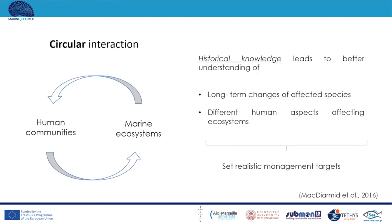The interaction between human communities and marine ecosystems is circular. This means that humans not only are affected by the marine environment but also affect marine ecosystems. An example of this could be fishing communities. Marine populations shape human communities that make a living from the services and goods provided by ecosystems. On the other side, human activities such as fishing have an effect on marine populations of targeted species, for example in the case of overfishing. Historical knowledge leads to a better understanding of both the long-term changes of affected species and the human aspects that affect the ecosystem, which can support us to set realistic management targets concerning marine environmental issues.